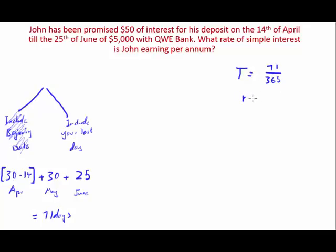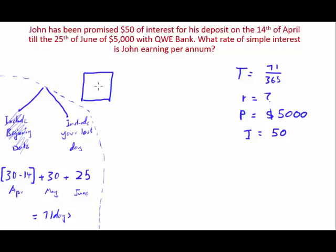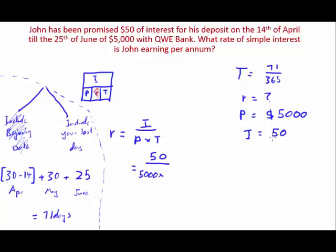We don't know the rate. We know the principal is $5,000 and the interest paid is $50. Let's draw out our diagram with I, P, R, and T. We need to find the simple interest rate, so let's shade that out. What we have left is: rate equals interest divided by principal multiplied by T.